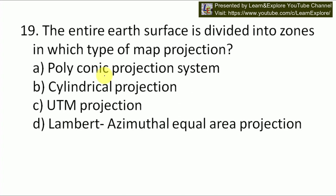Next question: the entire earth surface is divided into zones in which type of map projection? Options are polyconic projection, cylindrical projection, UTM projection, and Lambert Azimuthal Equal Area projection. Our answer will be C — UTM projection. UTM projection is capable of dividing the entire earth surface into zones with six-degree dimensions so that accurate location can be made by subdividing the classes.